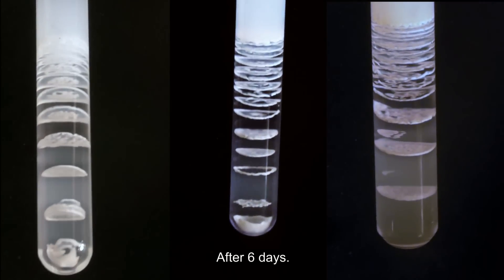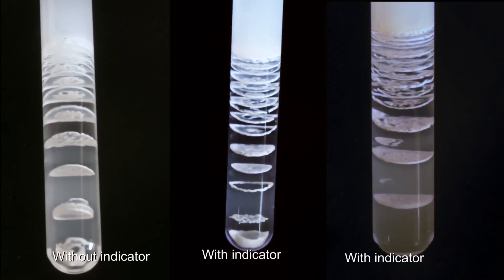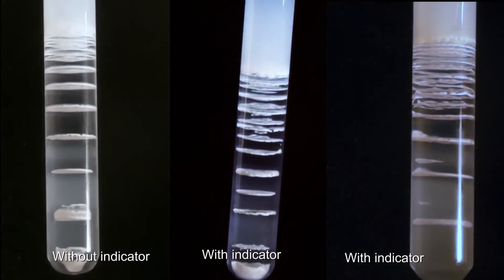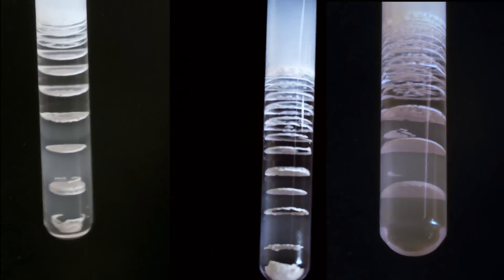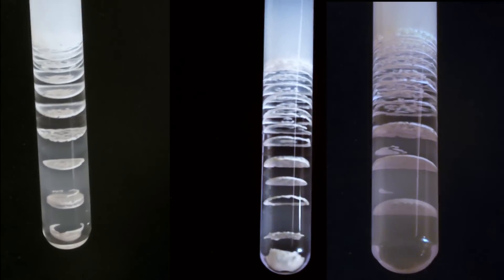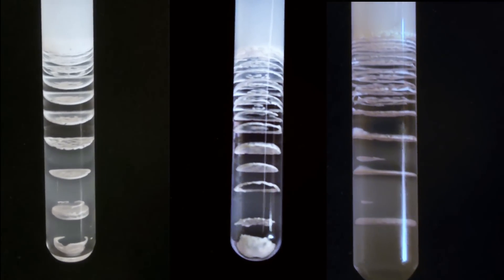This is the result after six days. The irregularities of the rings in the test tubes with the indicator are possibly formed due to the presence of bubbles. For the indicator, solutions should be preferred that are more concentrated.